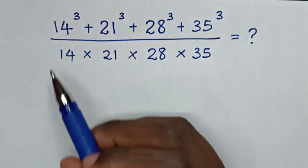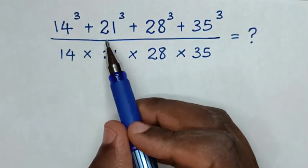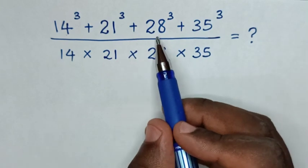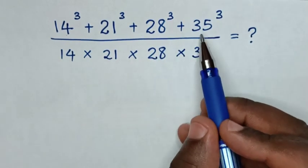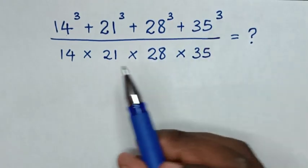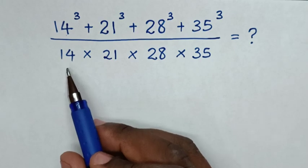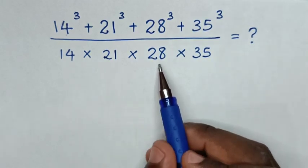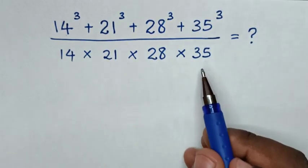Hello. How to solve 14 power 3 plus 21 power 3 plus 28 power 3 plus 35 power 3, over 14 times 21 times 28 times 35.